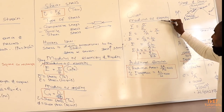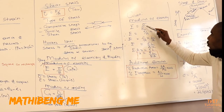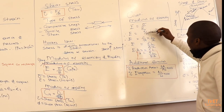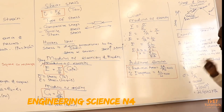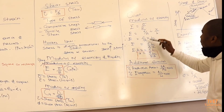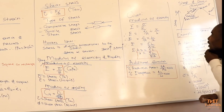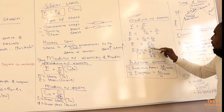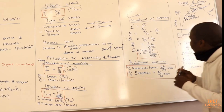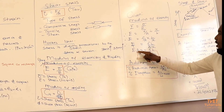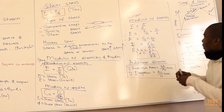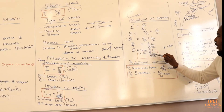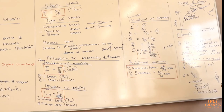If you are given the modulus of elasticity, we know E equals stress over strain, where stress is F over area and strain is change in length over original length. Rearranging this formula by transposing — changing division to multiplication — gives us: change in length equals FL over AE. This is the formula to use when you are given the modulus of elasticity.